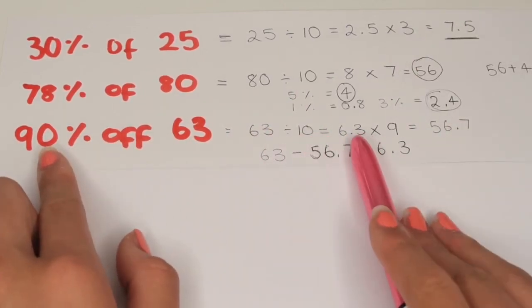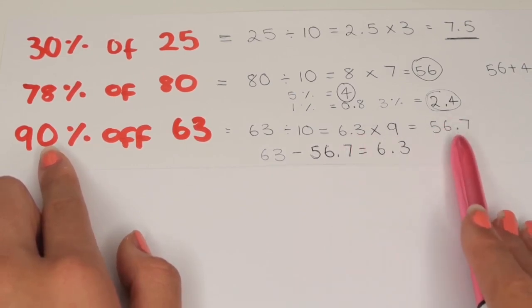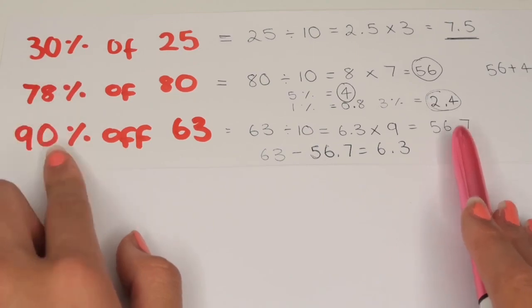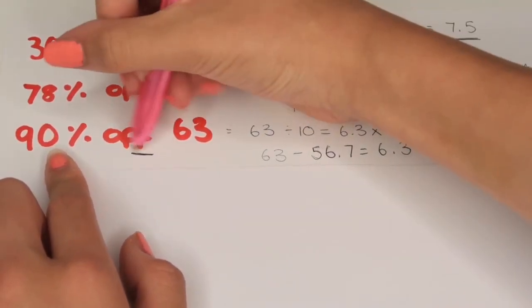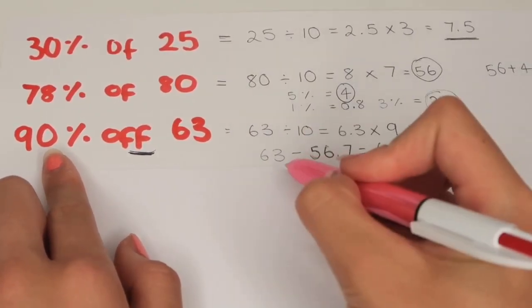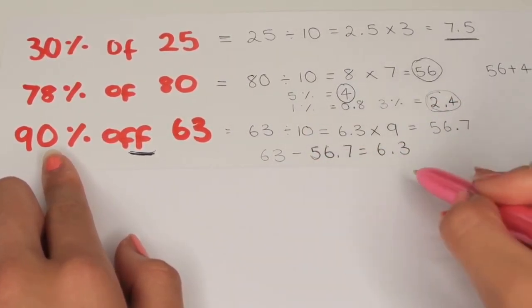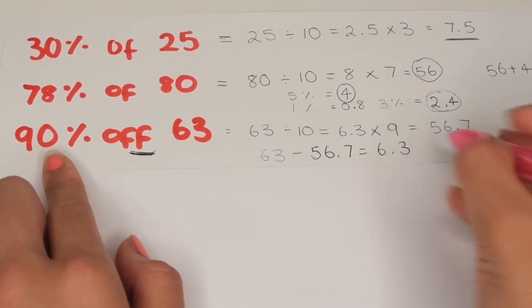90% off of 63. First we do 63 divided by 10 which is 6.3 and multiply this by 9 to find 90%, 56.7. Because we are doing 90% off of 63, we do 63 minus the 56.7, the 90% we found, which is 6.3.